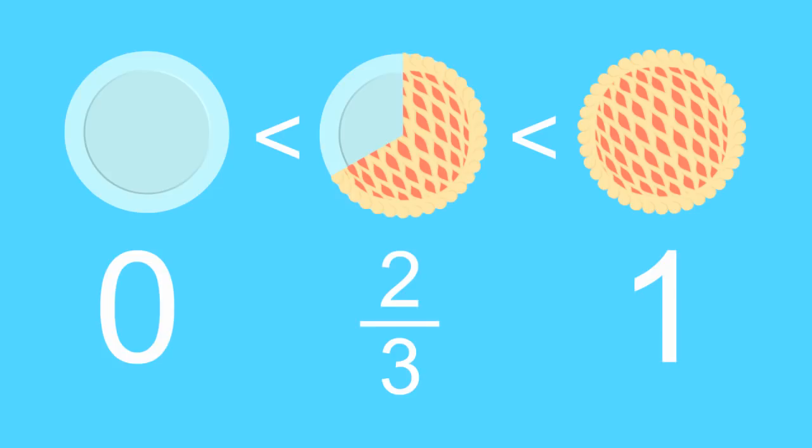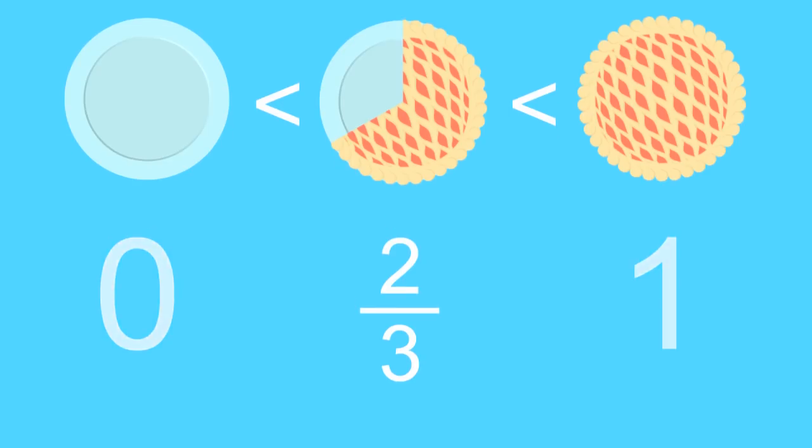Now, let's learn how to write fractions on a number line. Since we just talked about 2 thirds of a pie, let's use 2 thirds as our first fraction. Here's a number line that goes from 0 to 1. Where does 2 thirds belong? Well, 2 thirds means that if you divided something whole into 3 pieces, you'd have 2 of those pieces. So let's start by dividing 1 into 3 pieces.